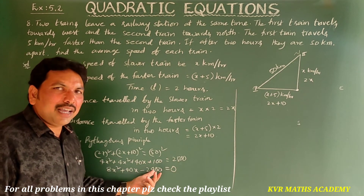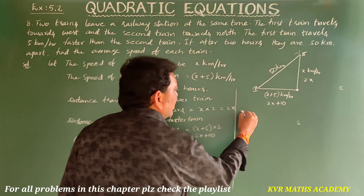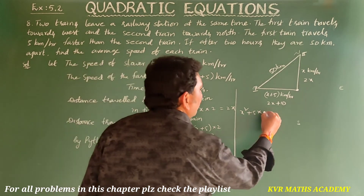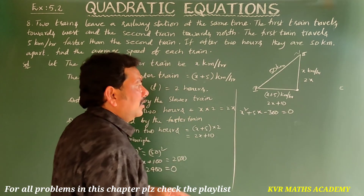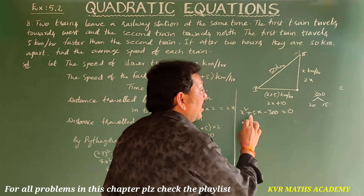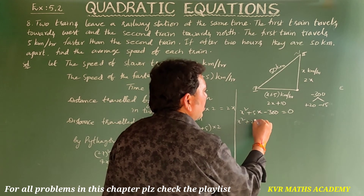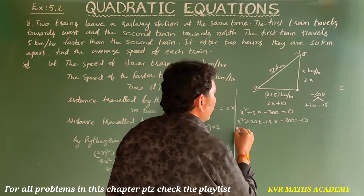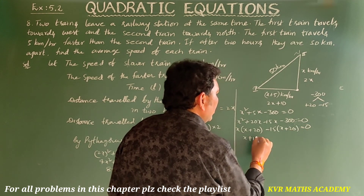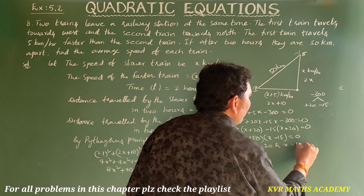Transferring 2500 to the left side: 8x squared plus 40x minus 2400 = 0. Dividing by 8: x squared plus 5x minus 300 = 0. Factorizing 300 to get difference of 5: 20 and 15 work. So: x squared plus 20x minus 15x minus 300 = 0, giving x(x plus 20) minus 15(x plus 20) = 0, so (x plus 20)(x minus 15) = 0.